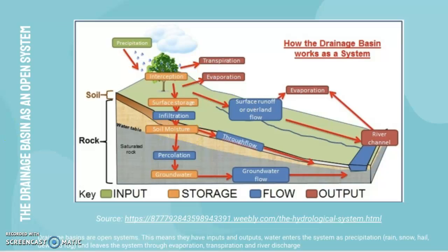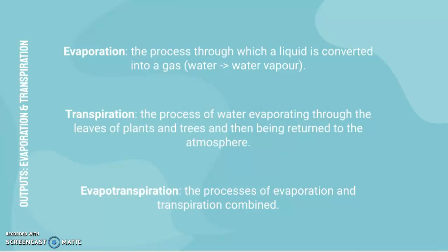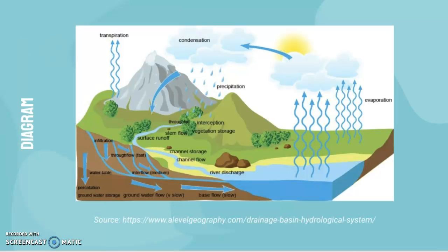We also have outputs: evaporation and transpiration. Evaporation is the process through which a liquid is converted into a gas — from water to water vapor. Transpiration is the process of water evaporating through the leaves of plants and trees and being returned to the atmosphere. Evapotranspiration is the combination of both processes. Remember the key difference: transpiration occurs only from vegetation.